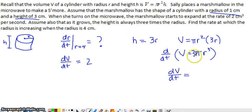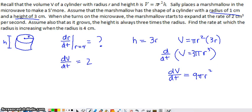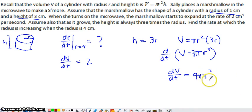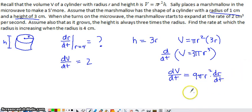The 3π is a constant, so taking the derivative of the right side, I multiply by the exponent to get 9π and subtract 1 from the exponent. You also have to use implicit differentiation within a related rates question. Since r changes over time, r is a function of t, so I apply the chain rule: the derivative of the outer function gives 9πr², keeping r inside, and then I multiply by the derivative of r with respect to t, giving dV/dt = 9πr² · dr/dt.